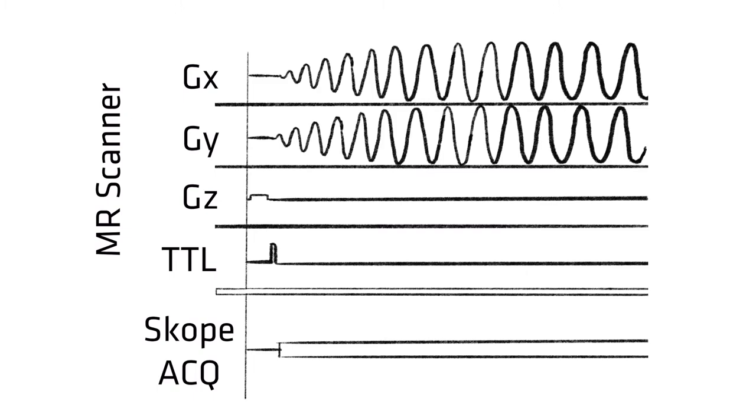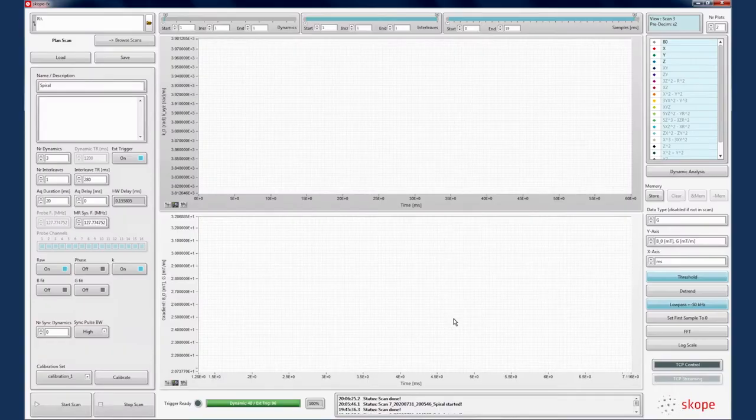As before, we adjust the scope acquisition parameters to capture the waveform. We know the spiral shot is 59 milliseconds long, with only one shot required for a full image. Here, we can set the acquisition duration to capture the whole waveform.